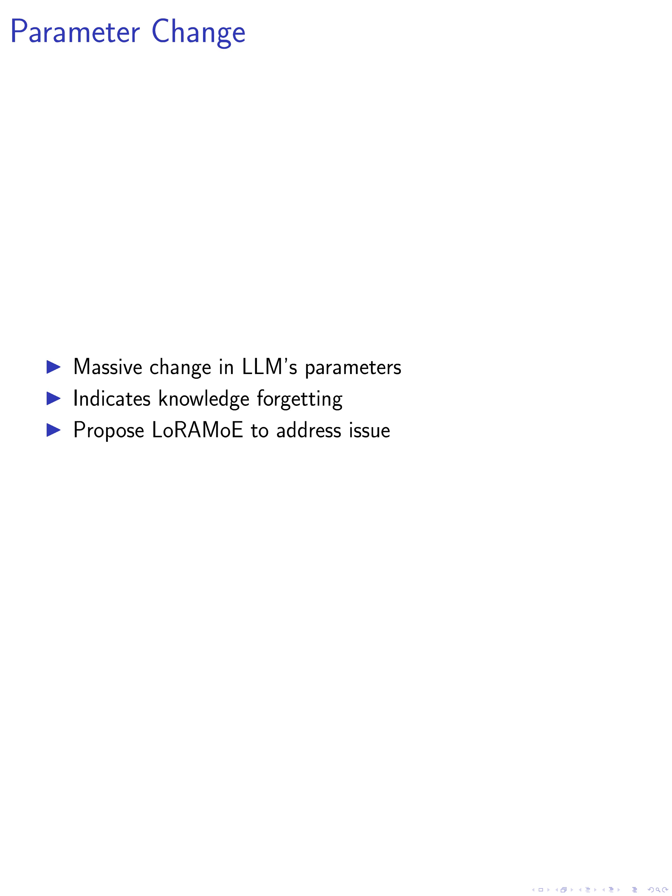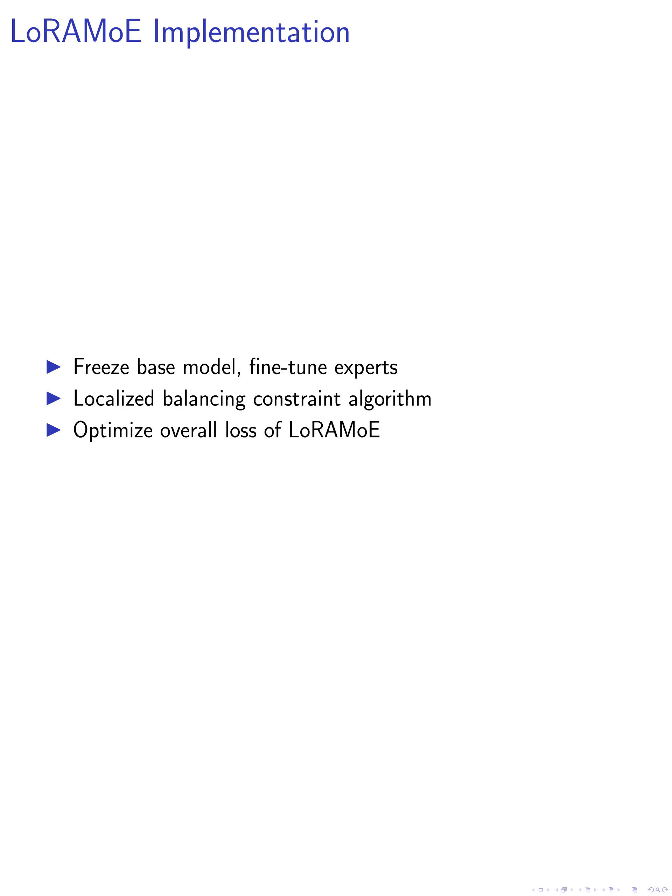LORAMOE is designed to resolve the conflict between expanding fine-tuning data and retaining world knowledge in LLMs. We implement LORAMOE by freezing the base model and fine-tuning the experts and routers within the LORAMOE layers. This approach significantly conserves resources compared to fine-tuning the full range of parameters. We introduce a localized balancing constraint algorithm to distribute the learning data among experts based on observed imbalances and data disparities, ensuring more accurate and representative parameter estimation.